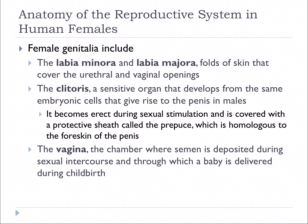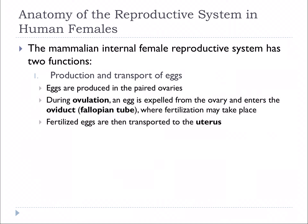The vagina is the tube where semen is deposited during sexual intercourse, and it's also the way in which a baby is delivered during childbirth. The internal female reproductive system has two functions: to produce eggs and then move eggs. Eggs are produced in the ovaries, and during ovulation, the egg is expelled from the ovary and enters the oviduct, or the fallopian tube, where fertilization may take place if sperm is present.